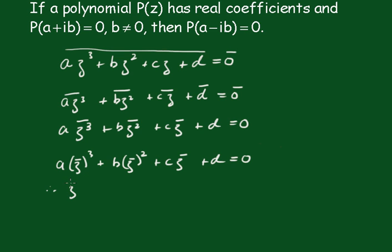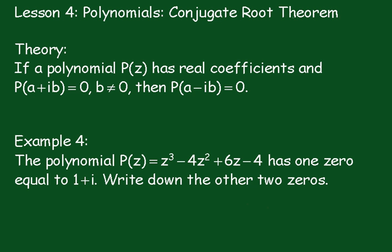Therefore, z* is a zero of this polynomial, of the original polynomial. Therefore, P(a - ib) = 0.